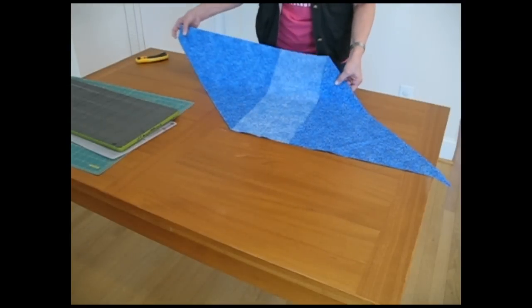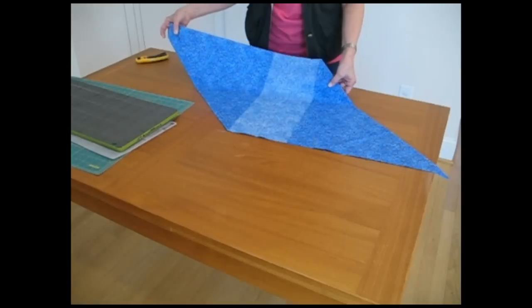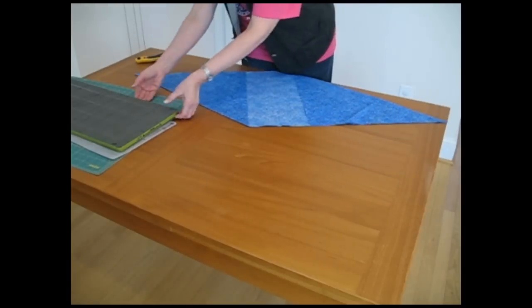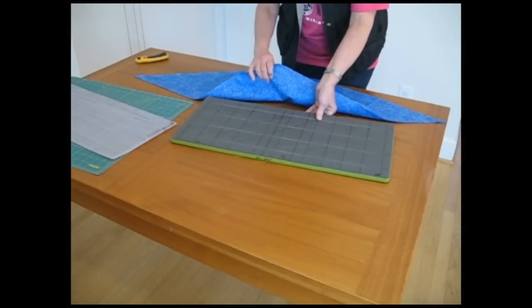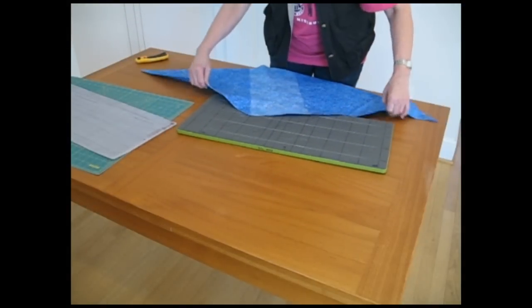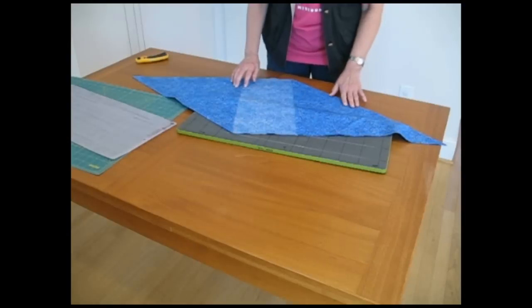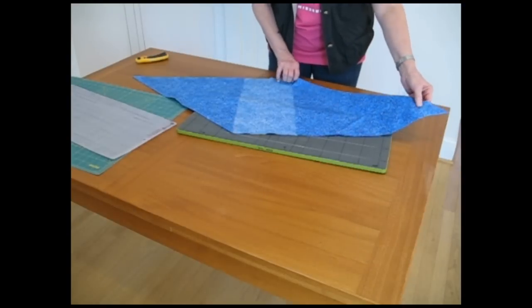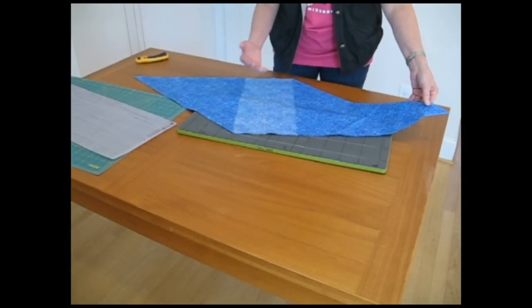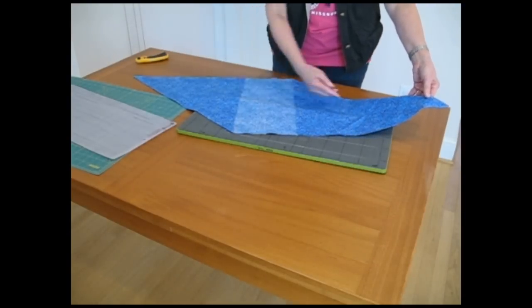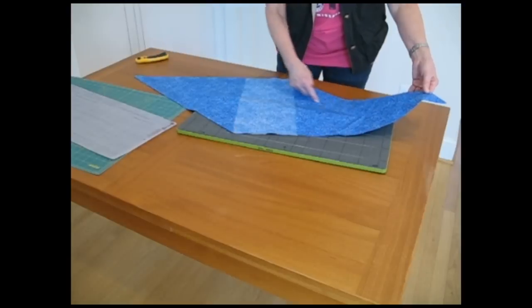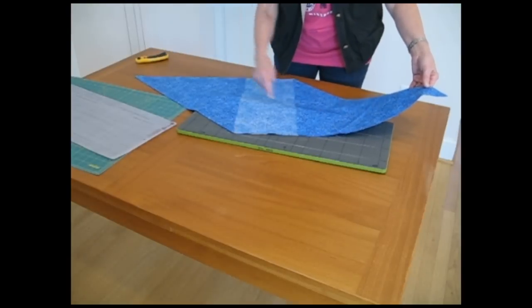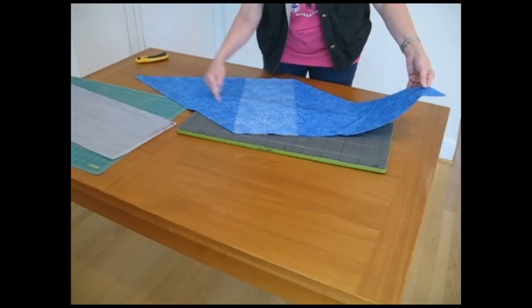So now the shape that you have is a parallelogram and bring your die over so that you can lay it out on the die. Now it's important to remember the direction that your bias strips are going to be cut. This is a bias edge and this is a bias edge. So your strips are going to be cut across the fabric in this direction.